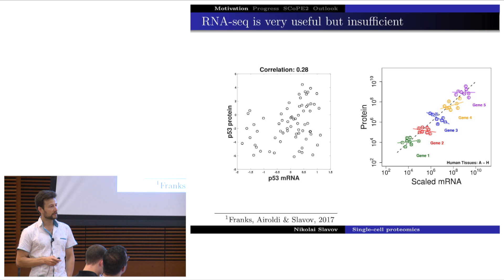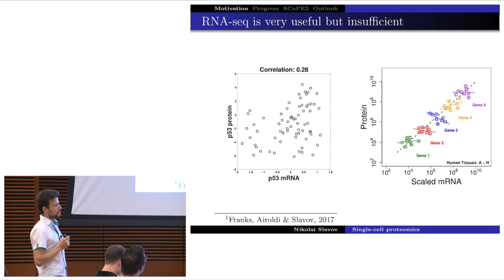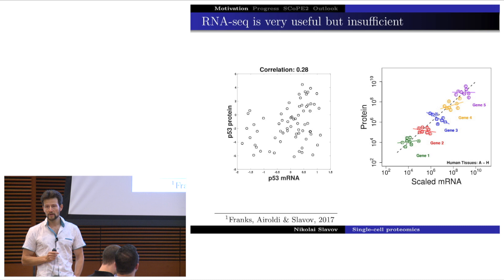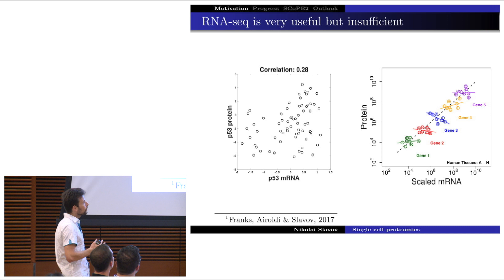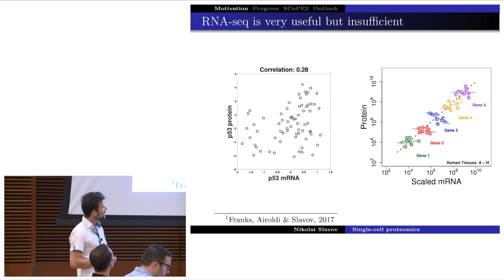But RNA is not protein. Take the anecdotal example of p53: if we measure the level of p53 protein and compare it to the mRNA level, we see that they don't correlate very well. Thanks to decades of research, we know this is because p53 abundance is regulated primarily at the level of protein degradation. More broadly, across proteins measured across many human tissues — from the proteome draft map and corresponding messenger RNAs — RNA levels are not very good at predicting the relative changes of proteins across different tissues.